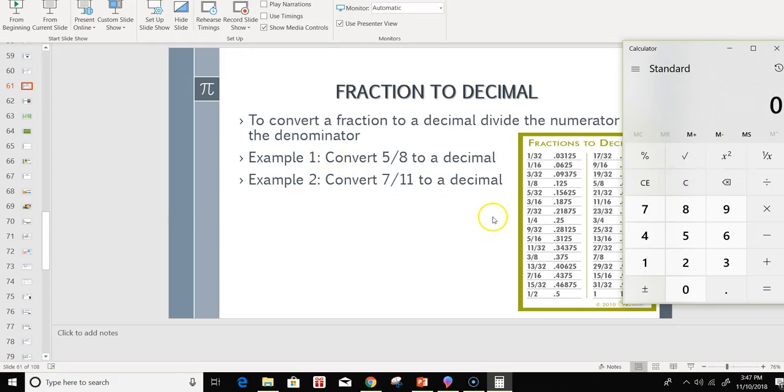The same thing if we wanted to convert 7 over 11. We get 0.63.